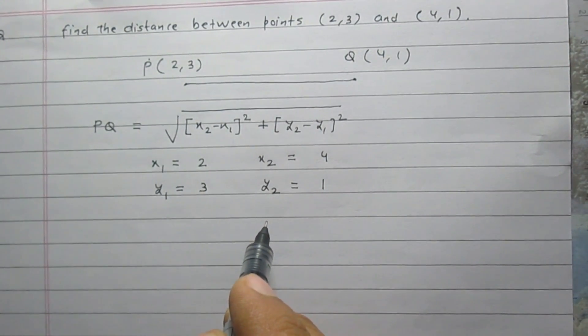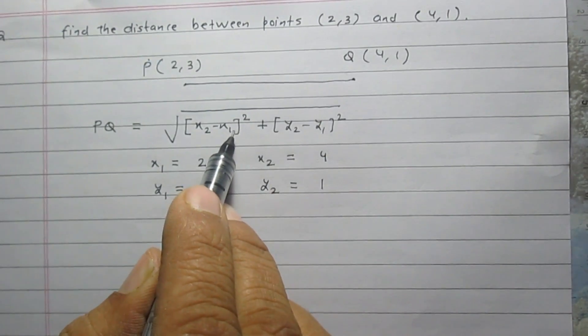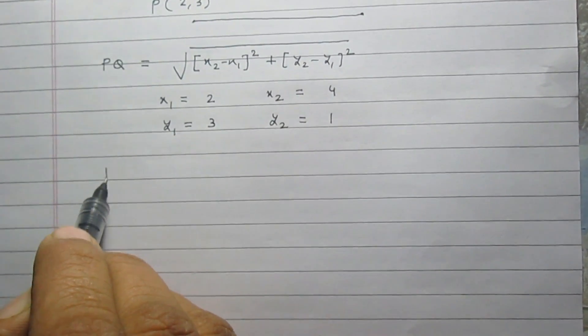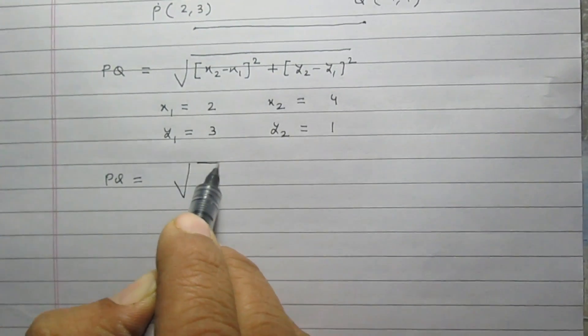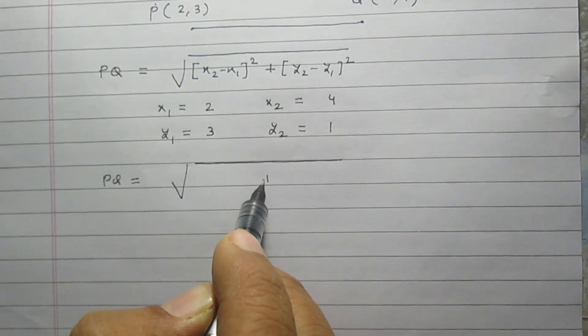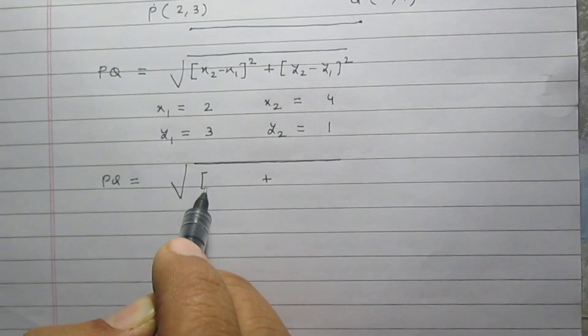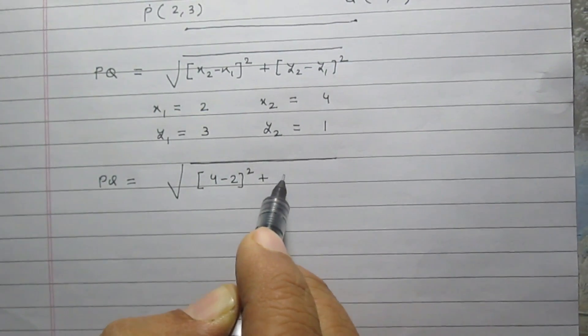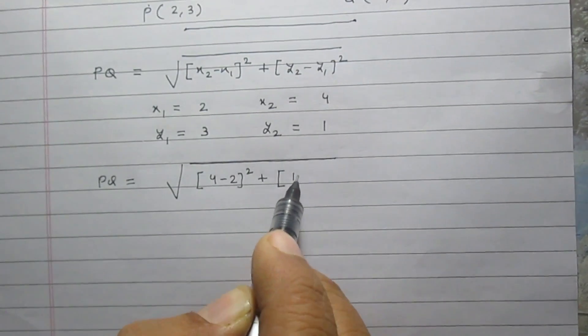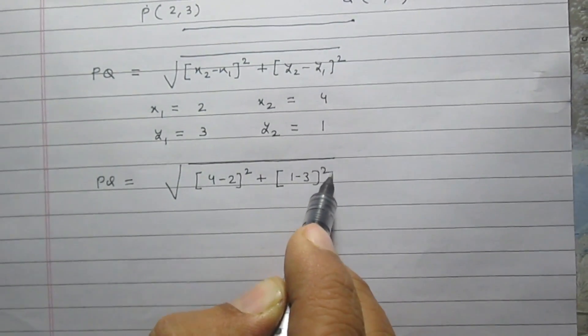After substituting these values in the distance formula, we will get PQ equals square root of (4 minus 2) squared plus (1 minus 3) squared.